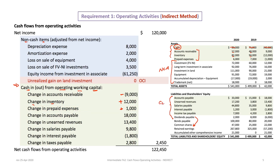Now we look at current liabilities, where the effect is the opposite. Accounts payable went from $15,000 to $33,000 — an increase of $18,000 — and that's actually an increase in cash. Think of it this way: if accounts payable goes down, you're using cash to pay the supplier. If accounts payable goes up, you're not paying the supplier, so cash is not going out. Current liabilities and cash move in the same direction; current assets and cash move in opposite directions.